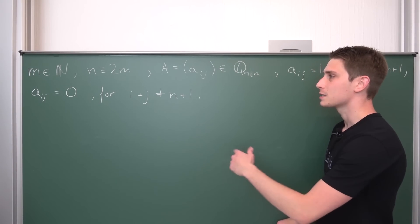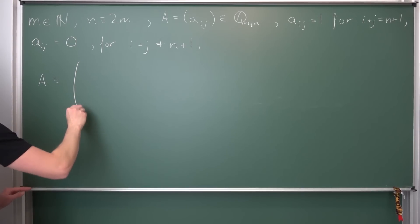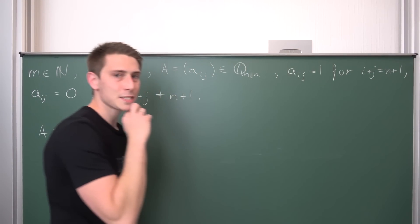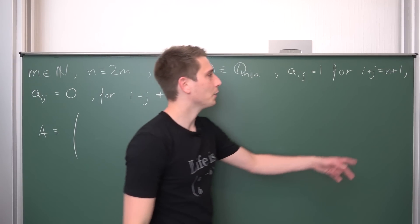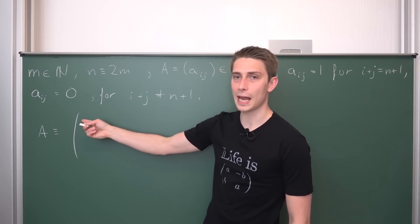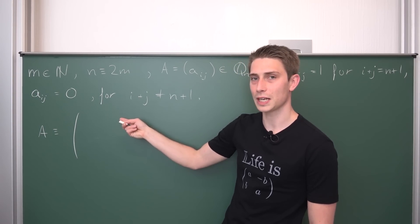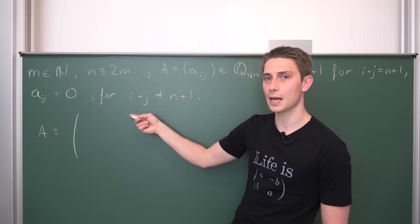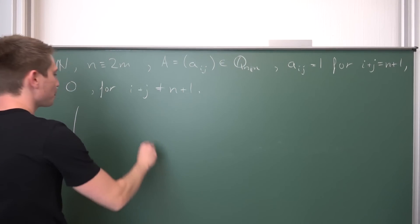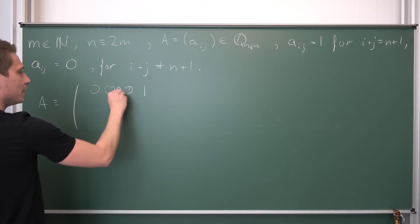So, 6 by 6 matrix. i plus j must be equal to n plus 1, which in our case is going to be 7. Let us take a look at the entries: A₁₁, A₁₂, A₁₃, A₁₄, A₁₅ — the sum of those indices goes up to 6. Then A₁₆: the sum is going to be 7, meaning this last entry is going to be 1 and all the other ones are 0. So we have five other entries that are 0. Moving to the second row: A₂₁, A₂₂, etc., up until A₂₅. Two plus 5 is 7, so A₂₅ is the 1, at spot number 5. Then A₂₆: 2 plus 6 is 8, so that's a 0.